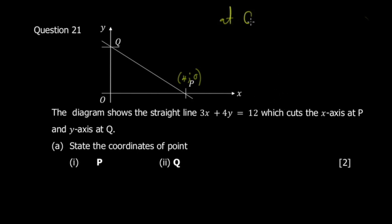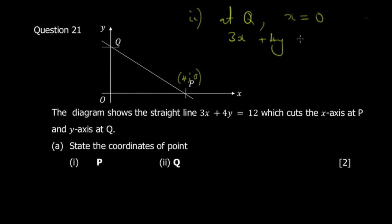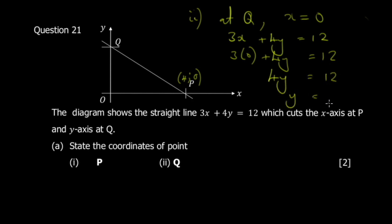At point Q, x = 0 because Q is on the y-axis. Substitute x = 0 into 3x + 4y = 12: you get 4y = 12, divide both sides by 4, y = 3. Therefore the coordinate for Q is (0, 3).